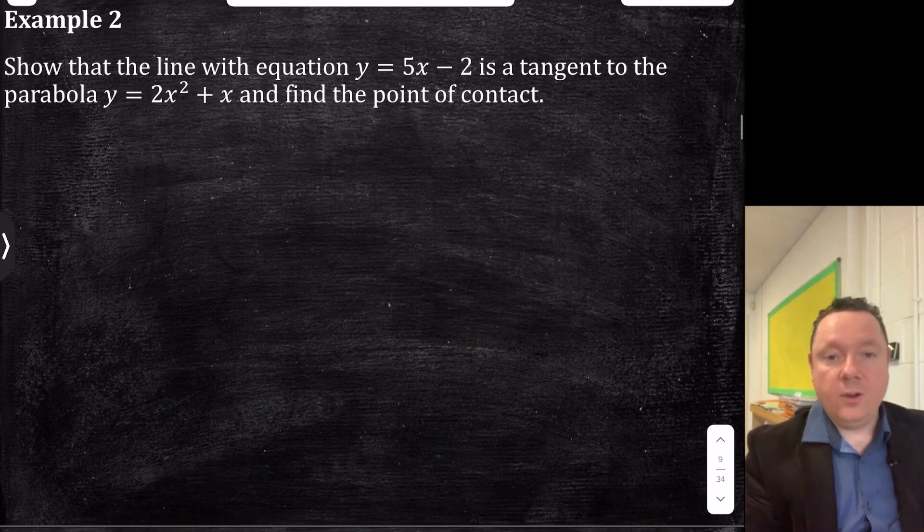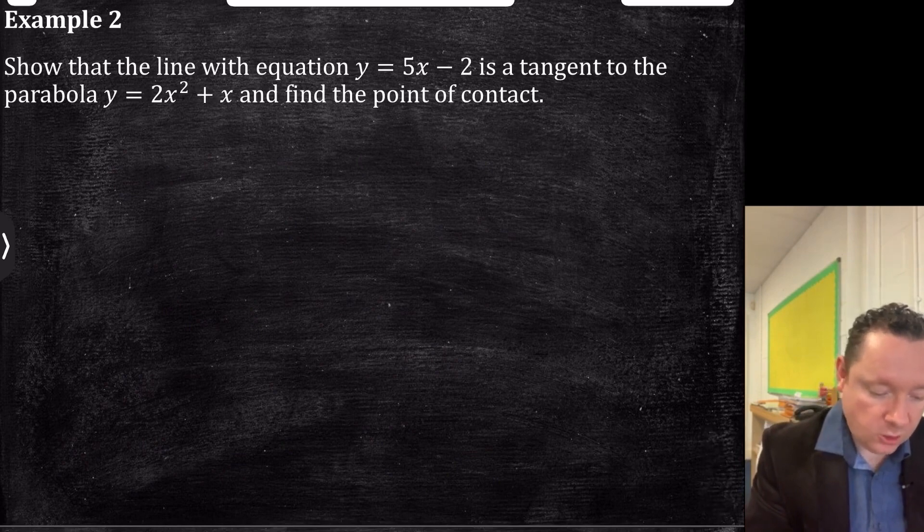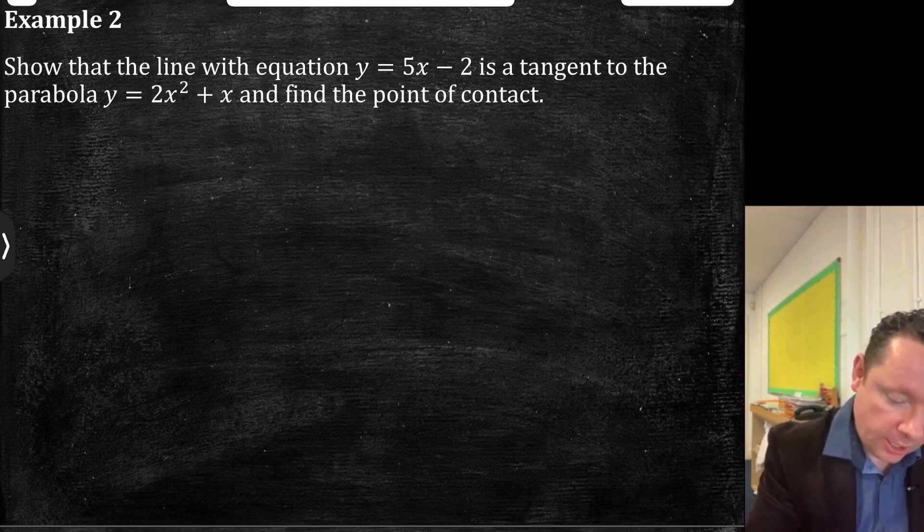Intersection of lines and parabolas, example 2. It says, show that the line with the equation y = 5x - 2 is a tangent to the parabola y = 2x² + x, and find the point of contact. If it's a tangent, it meets it at one point, and therefore, b² - 4ac = 0. Let's just check the point of contact.